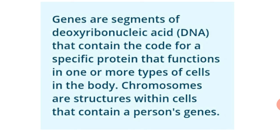The number of chromosomes is fixed for each particular species. For example, humans contain 46 chromosomes, meaning 23 pairs. Fruit fly, Drosophila melanogaster, contains 8 pairs of chromosomes, and the maize plant possesses 20 pairs of chromosomes in each cell.